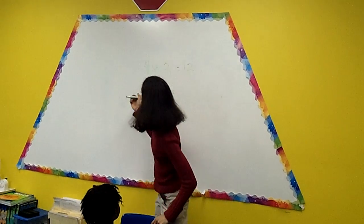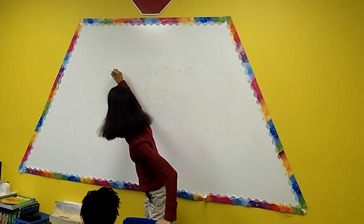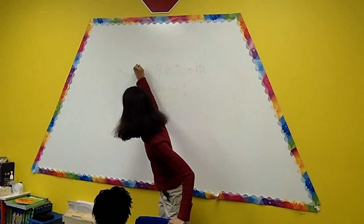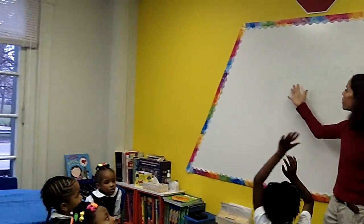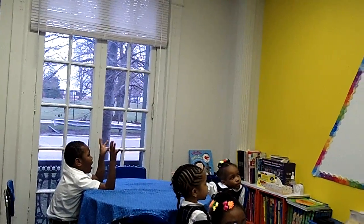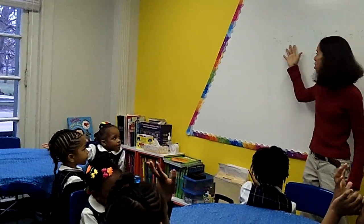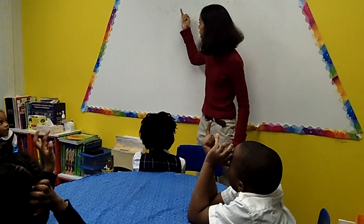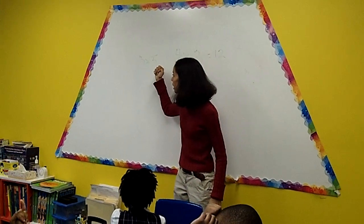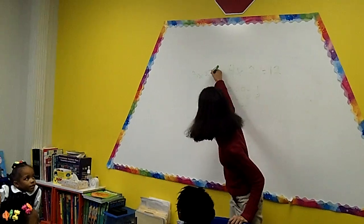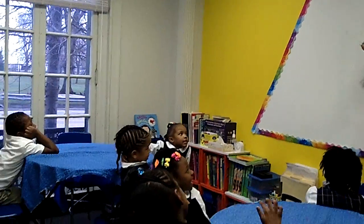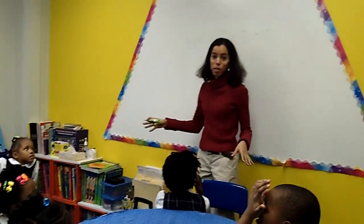How about three times five? So everyone hold up five fingers. We're going to count by threes five times. So three, six, nine, twelve, fifteen. So three times five is what class? Fifteen.